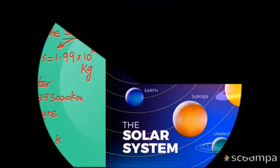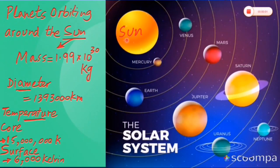The solar system was formed 4.6 billion years ago. It consists of a central star — the sun — the 8 planets orbiting the sun, dwarf planets like Pluto, moons, asteroids, comets, meteors, interplanetary gas,